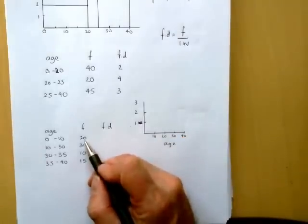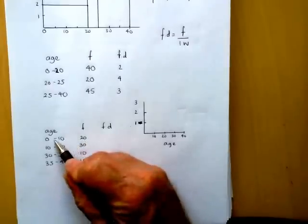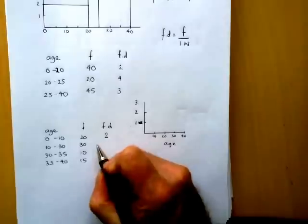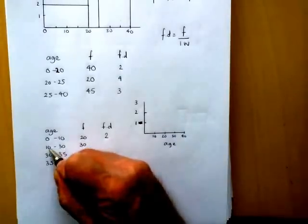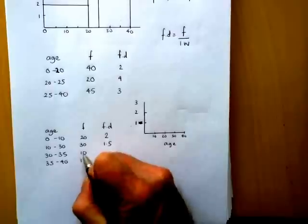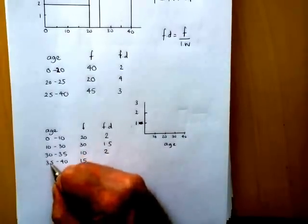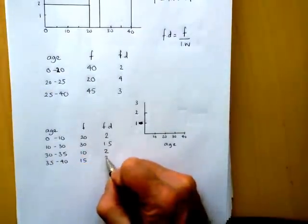Usually on non-calculator paper this will be very straightforward to do. So we've got 20 divided by 10. 30 divided by 20. 10 to 30 is 20. 10 divided by 20 is 1.5. 10 divided by width of 5 is 2. And 15 divided by width of 5 is 3.